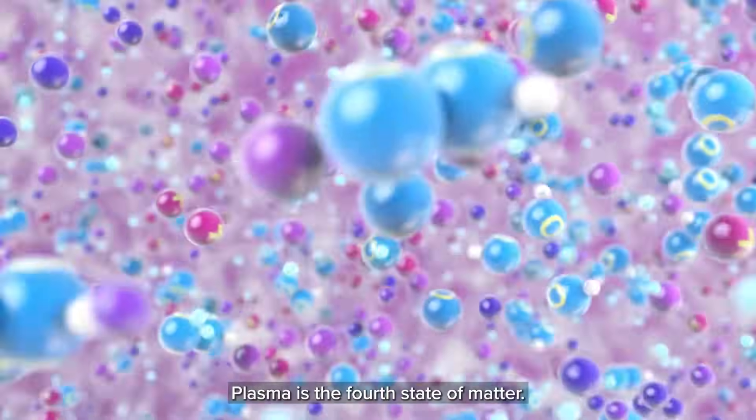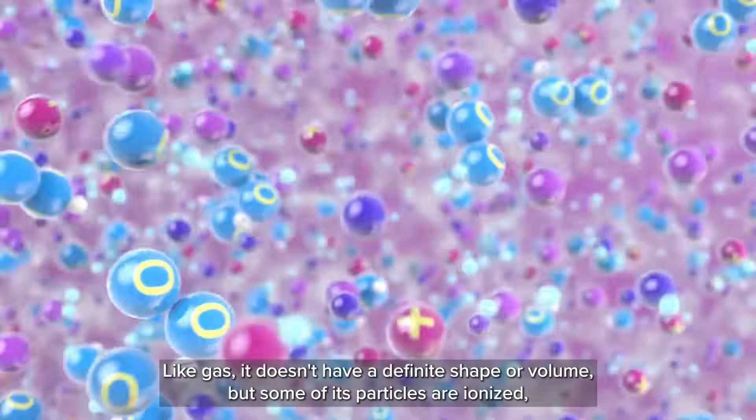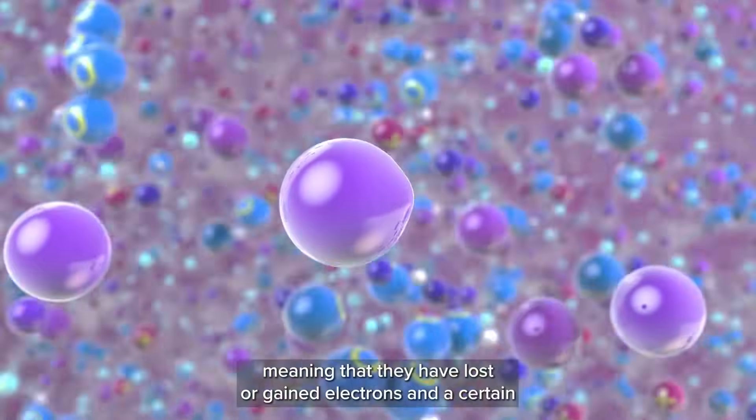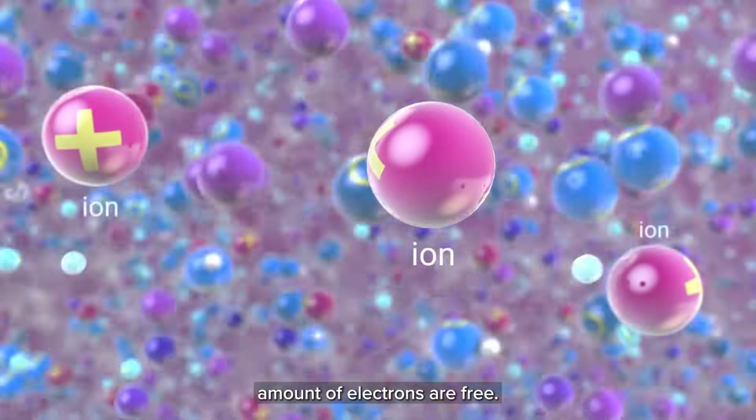Plasma is the fourth state of matter. Like gas, it doesn't have a definite shape or volume, but some of its particles are ionized, meaning they have lost or gained electrons, and a certain amount of electrons are free.